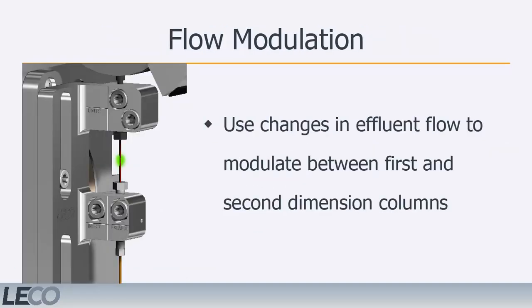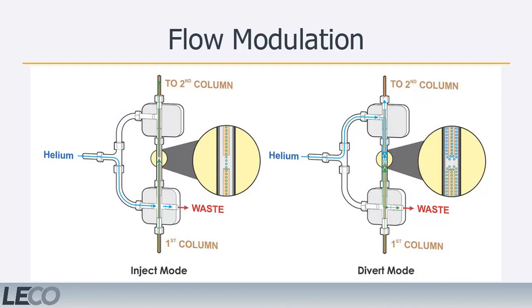An alternative to thermal modulation is flow modulation. A flow modulator is designed to use changes in effluent flow to modulate between the first and second dimension columns. This modulator creates a gap between the primary and secondary columns. When the modulator is switched to inject mode, the effluent is free to travel through the gap unimpeded and transfer into the secondary column. After a user-defined time in inject mode, the modulator is switched to divert mode, during which a carrier gas of higher flow and pressure floods the gap between the columns. This carrier gas diverts the primary column effluent path and prevents it from entering the secondary column. After a set amount of time, the modulator switches back to inject mode and a small amount of effluent is allowed onto the secondary column. This process is repeated throughout the course of the run.